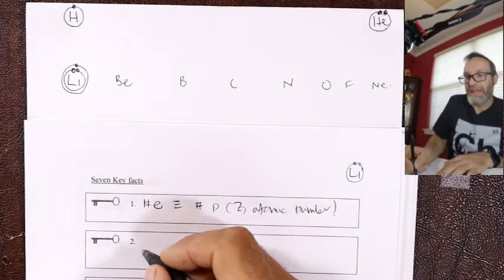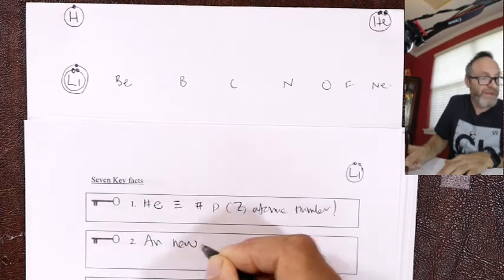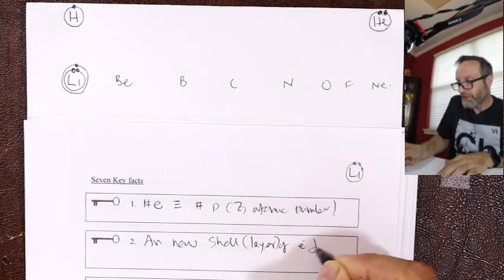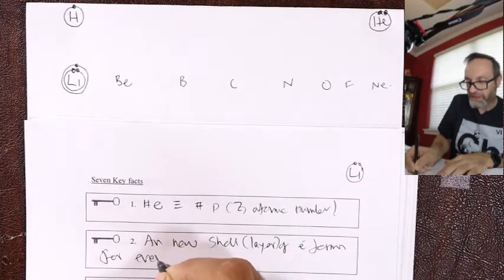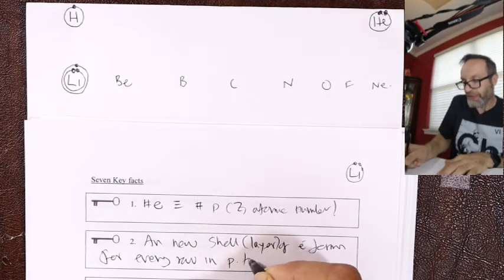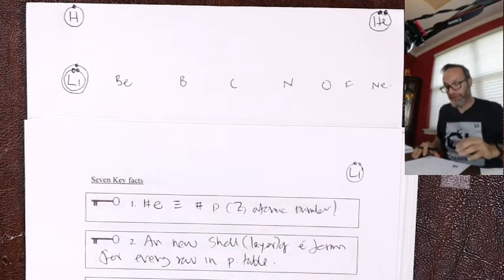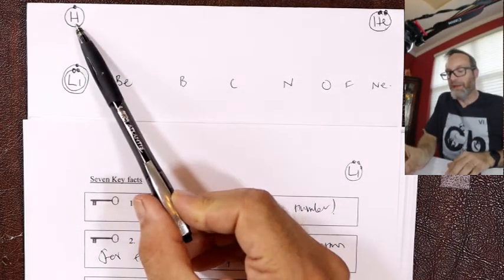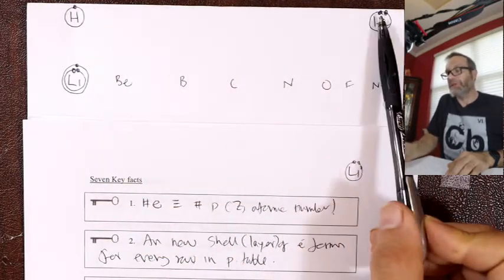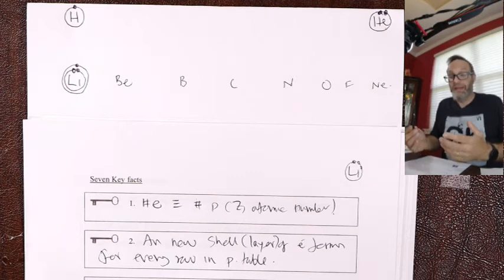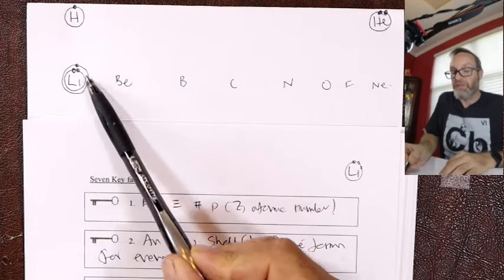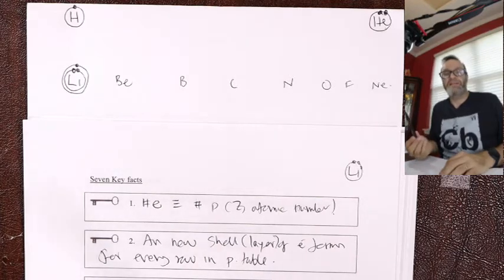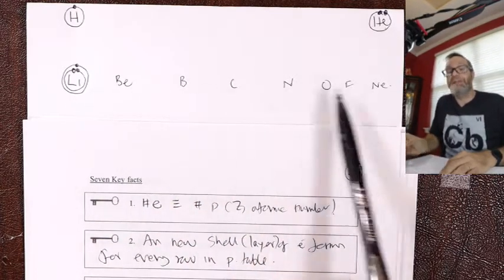Key fact number two: a new shell, or layer of electrons, forms for every row in the periodic table. That's a key and awesome fact. So if we look at the table, there are two elements in the first row, so there's room for two electrons in the first layer. It's the closest layer — it's the smallest. As we go further out, there's more real estate, more room for more electrons. How many electrons can you get in the second layer? Well, there are eight across there — eight in the second layer.